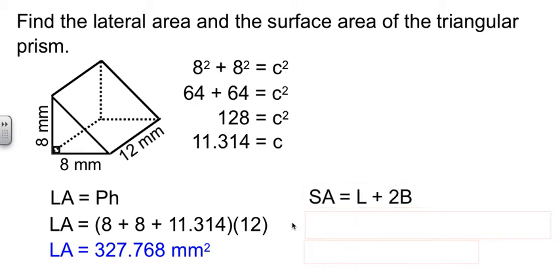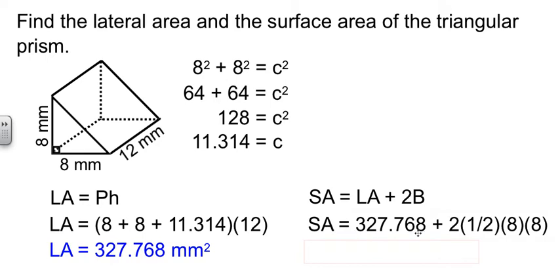To find surface area, for whatever reason I didn't put LA, I just put L. That makes it better. We need to take the lateral area from before, plus two times the area of the base. Well, the area of a triangle is one-half base times height. One-half, eight times eight.